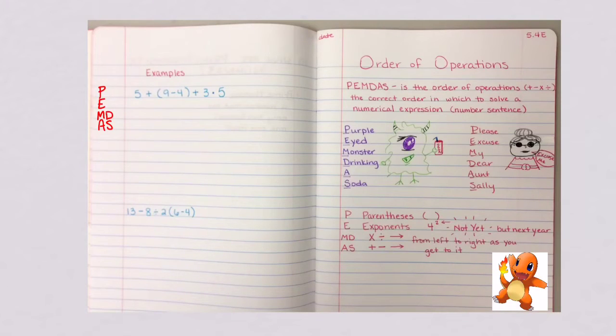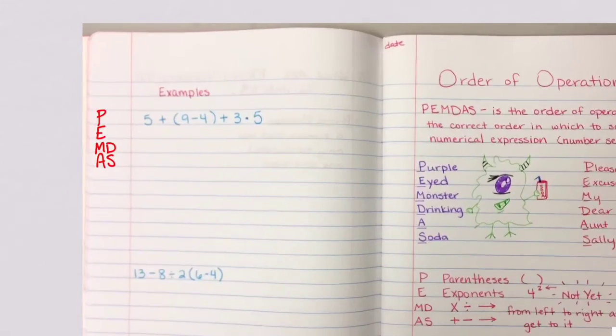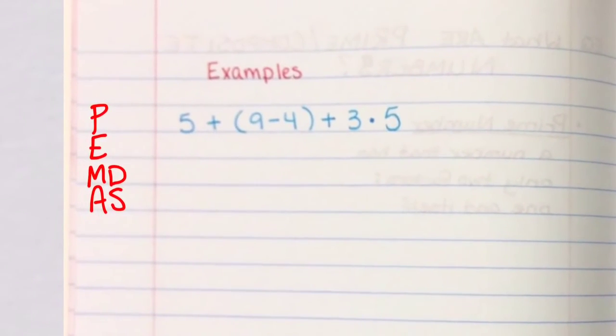Alright, on the left hand side, you're going to come over here and you're going to write your examples. So we're going to do 5 plus parentheses 9 minus 4 close parentheses plus 3, and it's a little dot floating in the air. This is taking the place of the multiplication symbol. So when we start algebra,